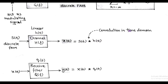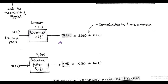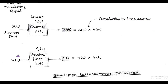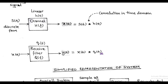At the receiver side, there is a receive filter having transfer function Q(f), and the output of the receive filter y(t) is again the convolution of x(t) and q(t) in the time domain. So during baseband transmission, there is a double convolution — one at the channel output, and the other at the receiver output.